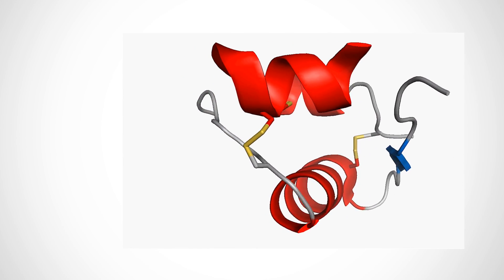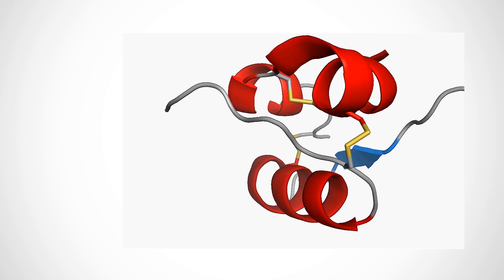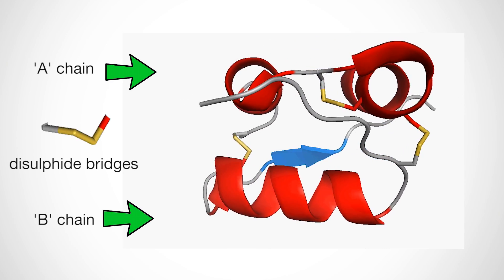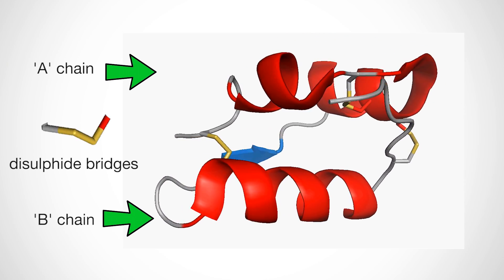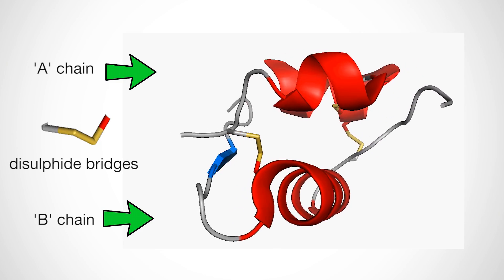Insulin is a complex three-dimensional structure. It consists of two polypeptide chains, A and B, connected by two disulfide bridges.